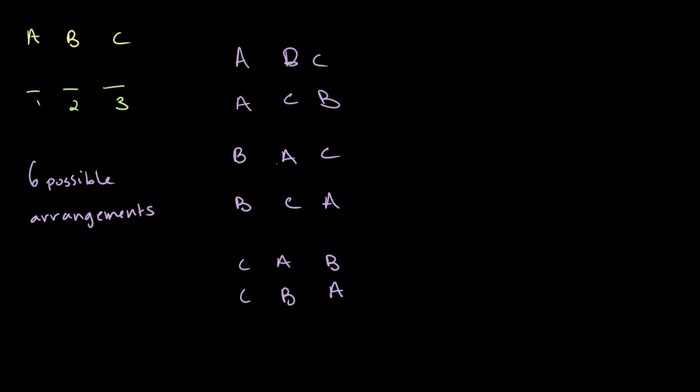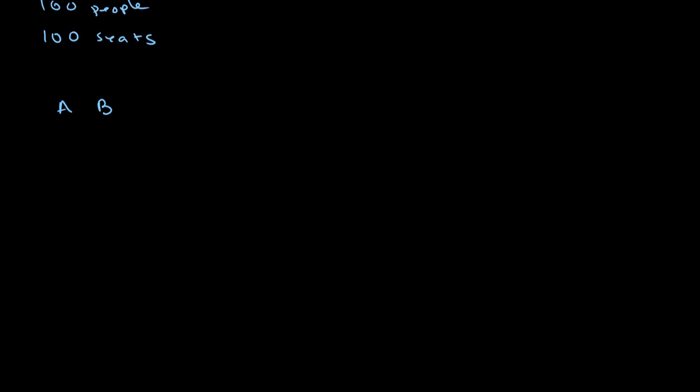Now, doing what we just did — writing out all of the different possible combinations in which people can sit — is simple enough. But what would we do if we had 100 people and 100 seats and we wanted to find out all the different ways that we could arrange people in these seats? We need to find a way to mathematically express this. So let's first try with our previous question: persons A, B, and C sitting in seats one, two, and three.